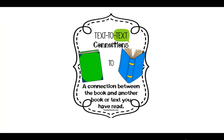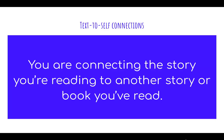A text-to-text connection is a connection between the book and another book or text you have read. You are connecting the story that you're reading to another story or book you've read in the past — where one book reminds you of another book, or where one character reminds you of a different character in a book.